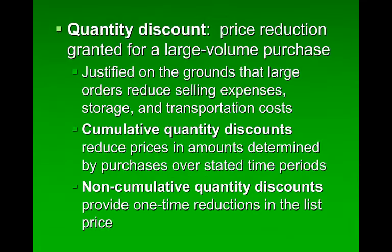The cumulative discount is an over-time discount. For example, if over a year you purchase $25,000 in product, a 3% rebate is given. The non-cumulative discount means one unit pays the list price, but buying more earns a discount. For example, buying 2–5 units gets 10% off, 6–10 units gets 20% off, and over 10 units gets 25% off.